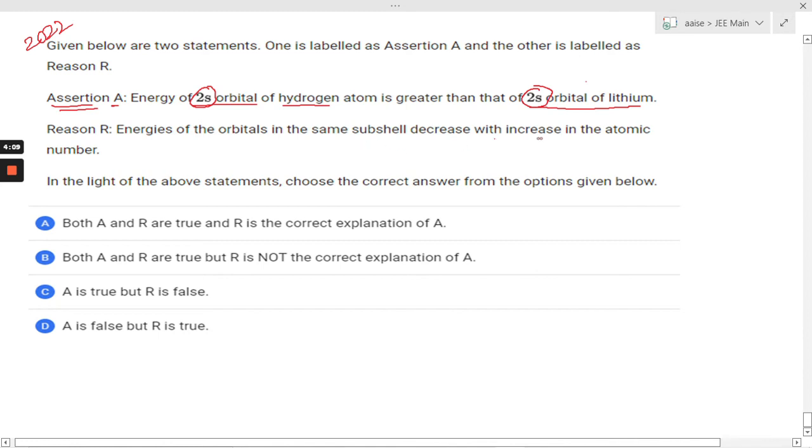Let us see, as the atomic number increases, means as Z increases, the potential energy of electron present in same shell will also decrease, or you can say will become more and more negative. And therefore we can say the total energy E_total will also become more